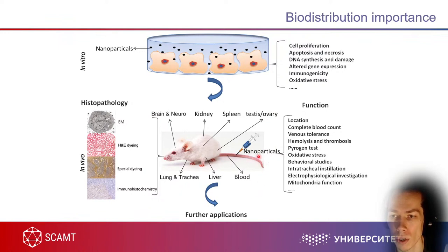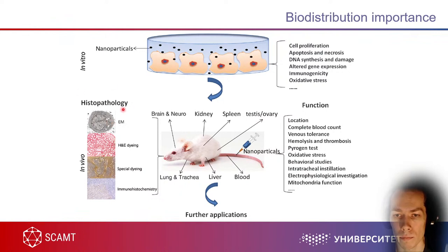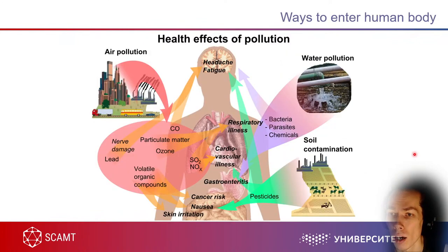The brain cannot accumulate particles because most particles cannot pass the blood-brain barrier. Testes also can't accumulate particles easily, but exposure can definitely produce reproductive toxicity outcomes. To assess the outcomes from nanoparticle use, we need histopathology examination — different hematoxylin stainings and special stainings for, for example, iron or gold nanoparticles.